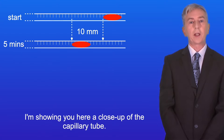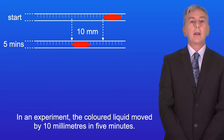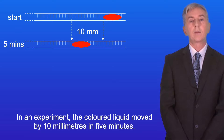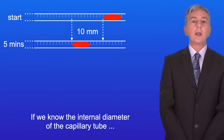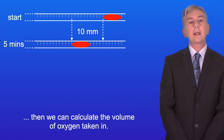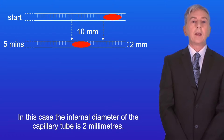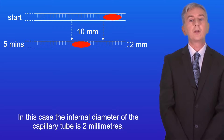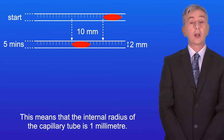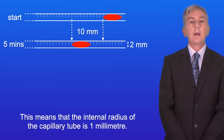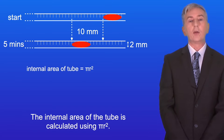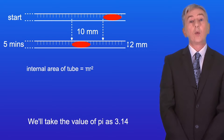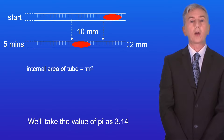I'm showing you here a close-up of the capillary tube. In an experiment the coloured liquid moved by 10 millimetres in 5 minutes. Now if we know the internal diameter of the capillary tube then we can calculate the volume of oxygen taken in. In this case the internal diameter of the capillary tube is 2 millimetres, which means the internal radius is 1 millimetre. The internal area of the tube is calculated using pi r squared — we'll take the value of pi as 3.14.